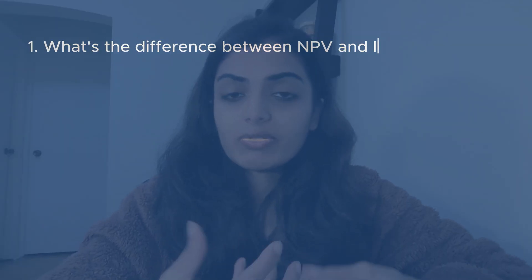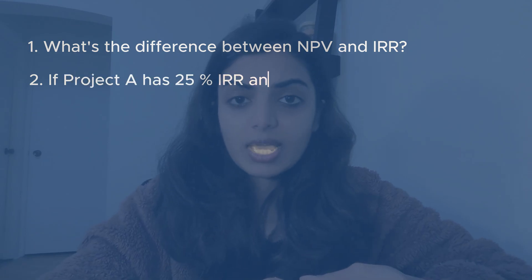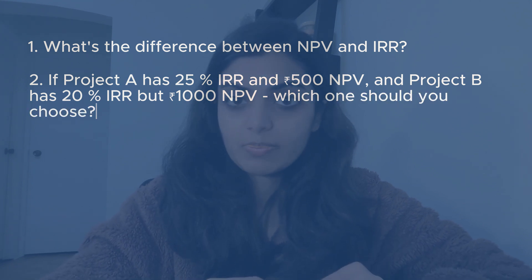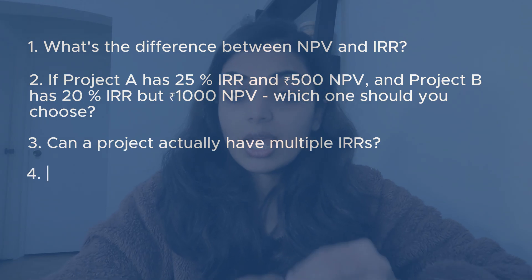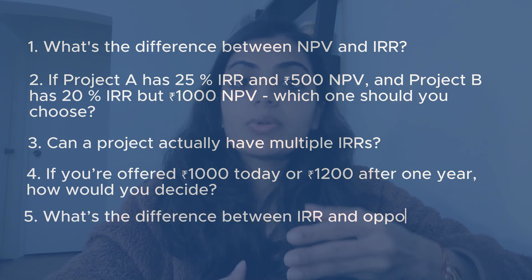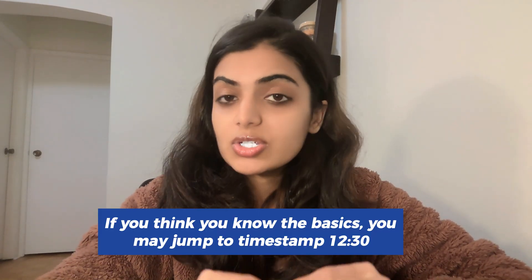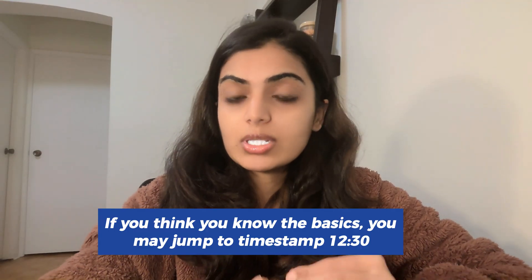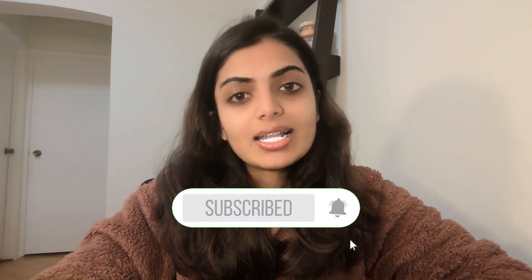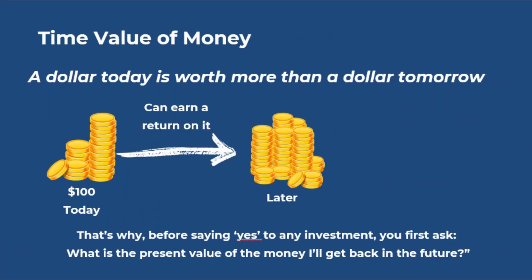You've probably seen interview questions like: what's the difference between NPV and IRR? If project A has 25% IRR and $500 NPV, and project B has 20% IRR but $1000 NPV, which would you choose? Can a project have multiple IRRs? If offered $1000 today or $1200 after a year, how should you decide? And what's the difference between IRR and opportunity cost of capital? In this video we'll break all of these down step by step.